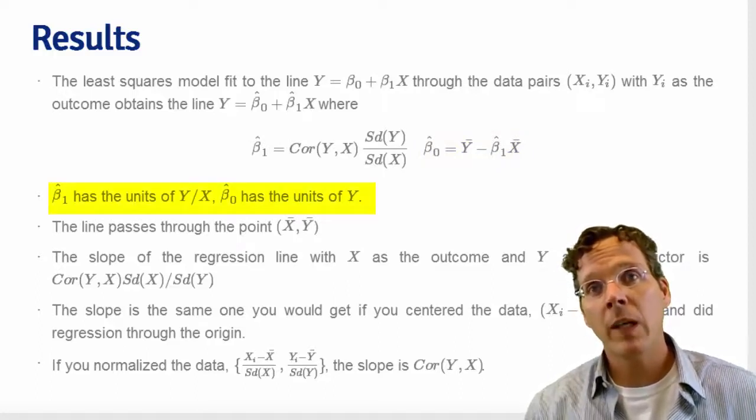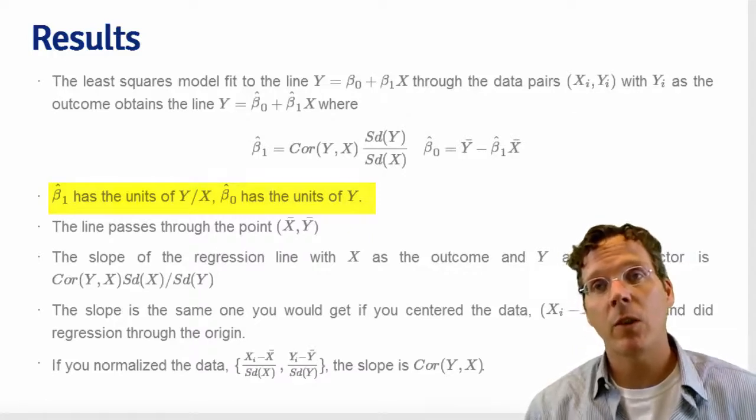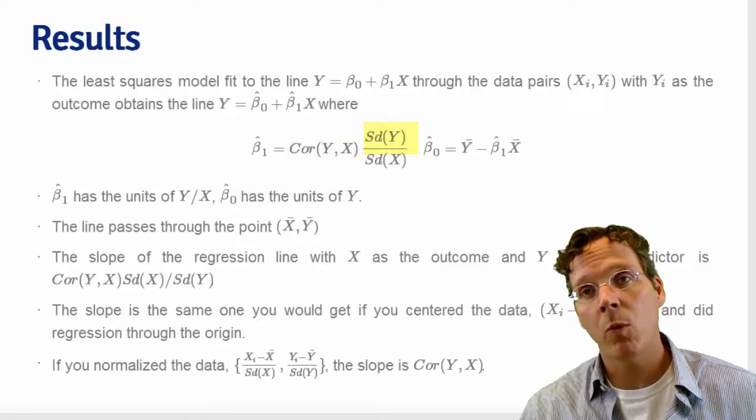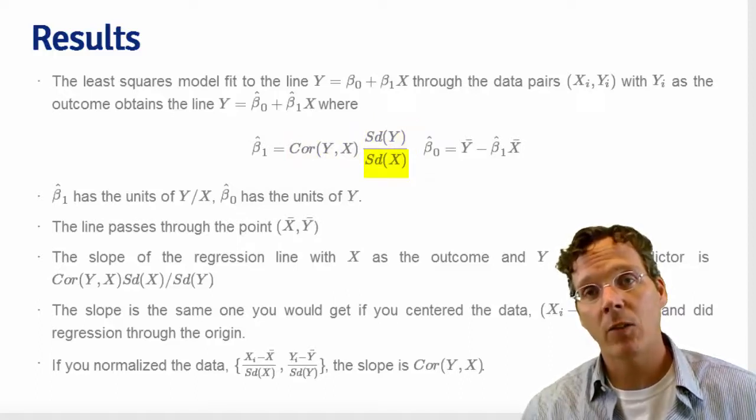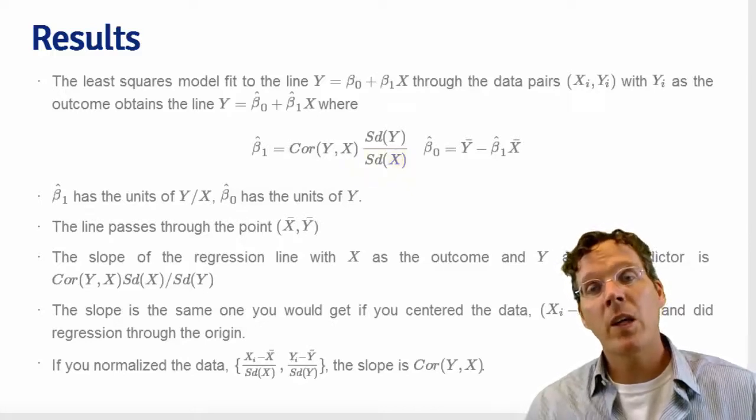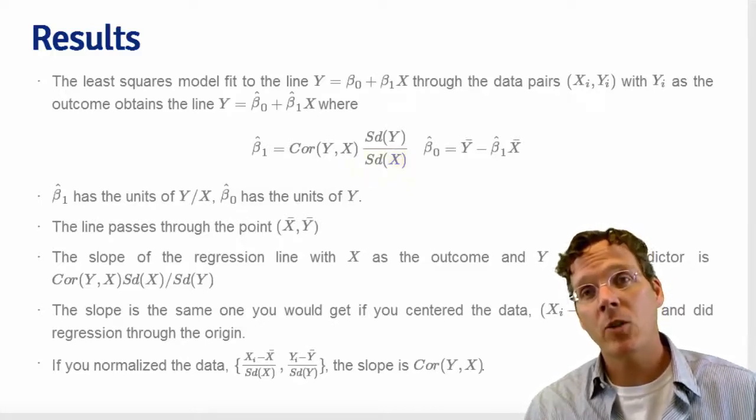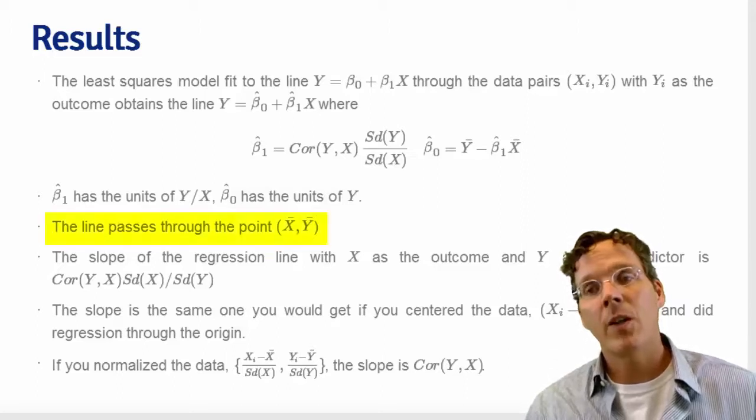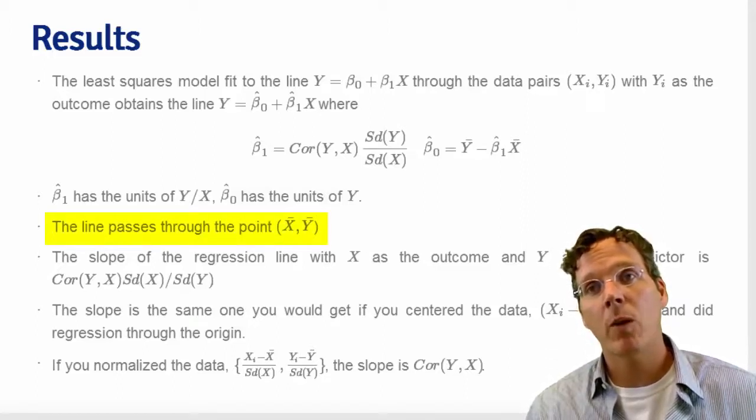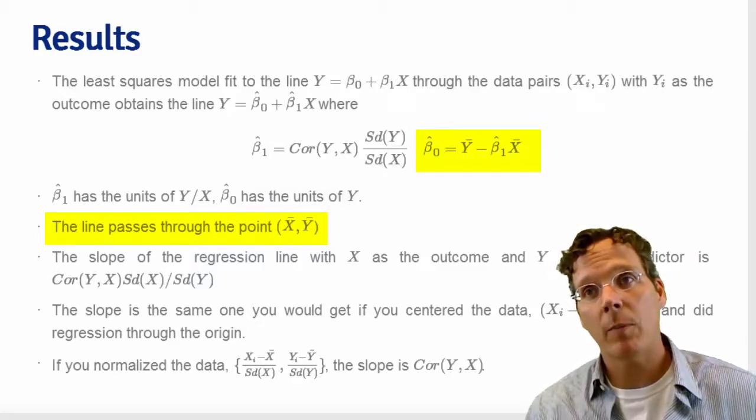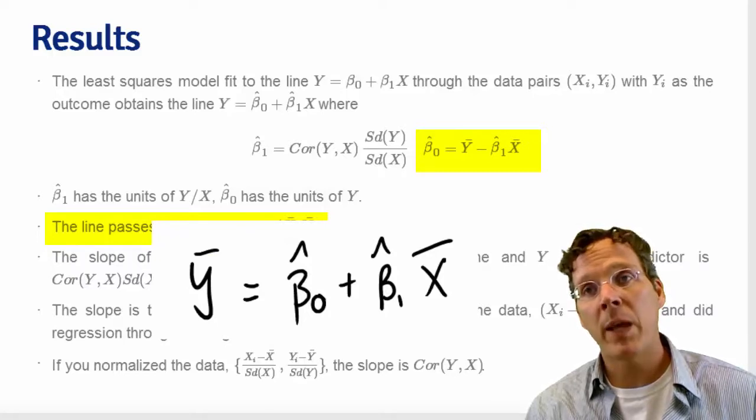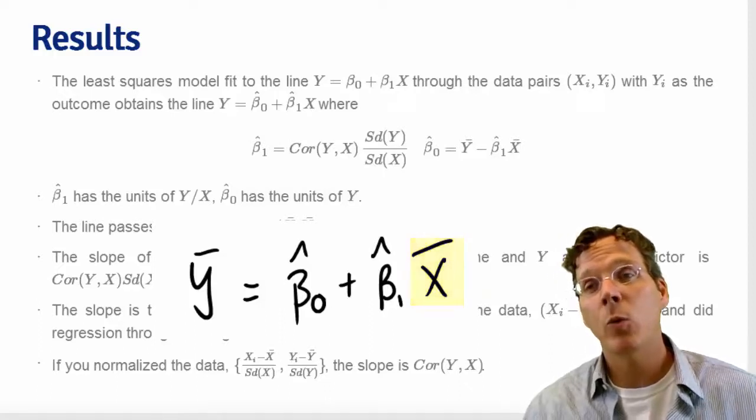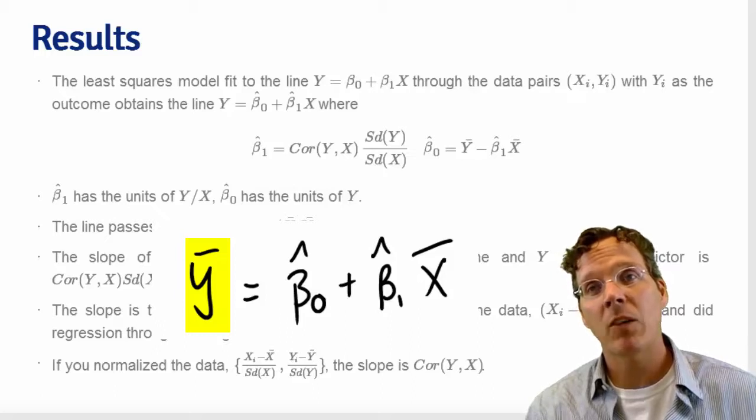Let's go through a couple of consequences of this result. First, beta1 hat has the units of y divided by the units of x. We can see this because the correlation is a unitless quantity, standard deviation of y has the units of y, and standard deviation of x has the units of x. Because the slope of the line is change in y divided by change in x, it has to have units of y divided by units of x. Another important point is that the line always passes through the point x bar, y bar. We can see that from the equation for the intercept. If we rearrange it, we simply get y bar equals beta0 hat plus beta1 hat x bar.